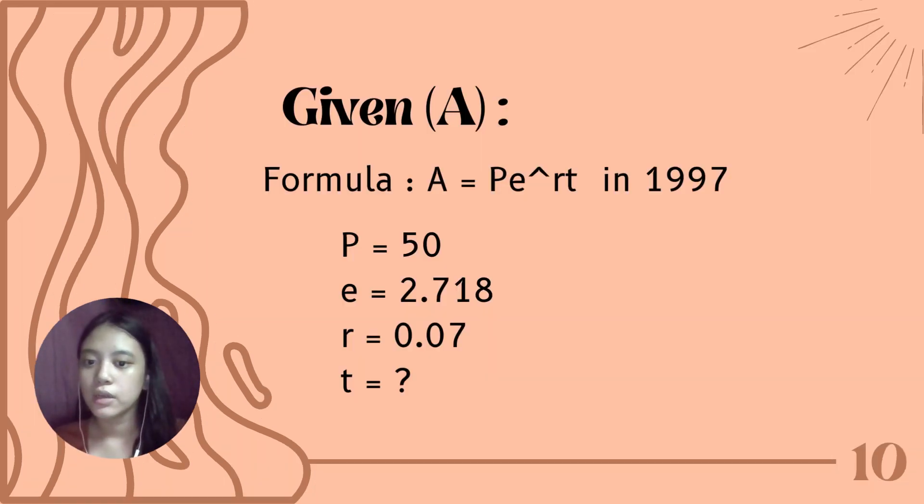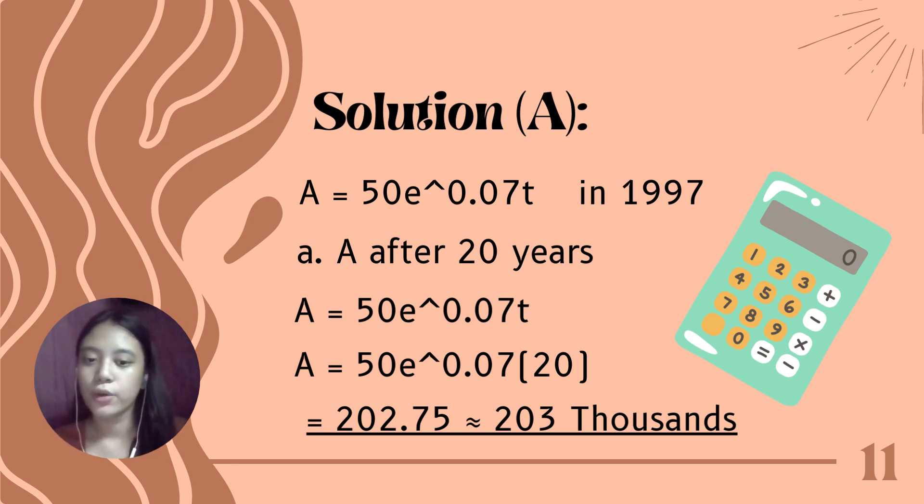Let's talk about letter A. What are the given in letter A? Our formula is A equals Pe raised to rt in 1997. P is 50, e is 2.718, r is 0.07, and A is what's missing, so we need to find A. Since we know the time, we distribute the given values. A equals 50e raised to 0.07t in 1997.